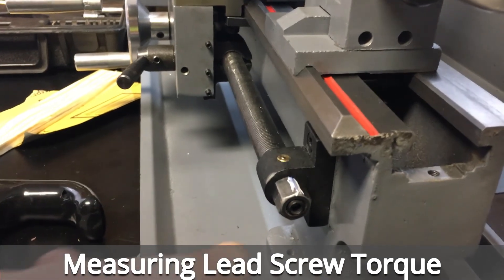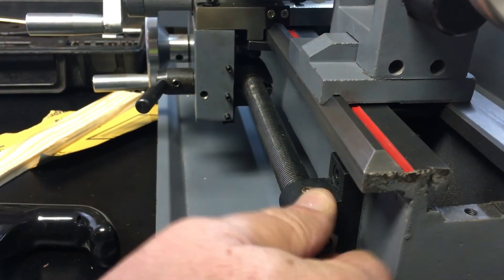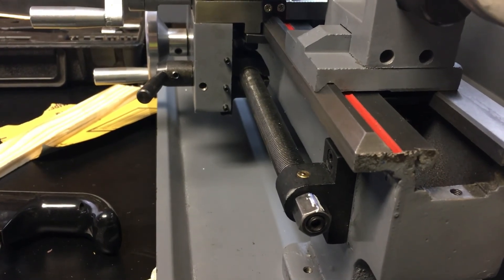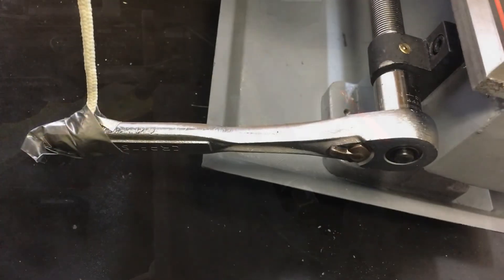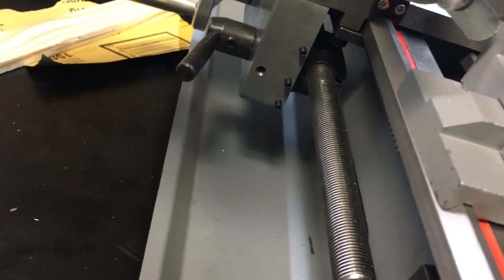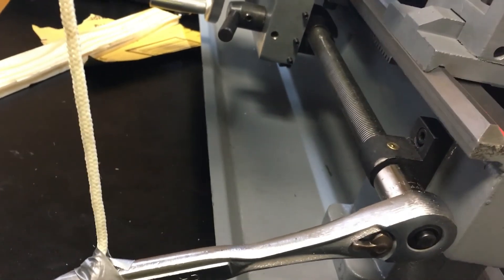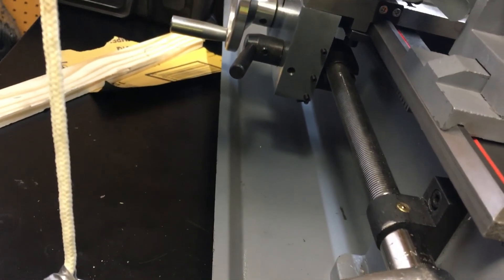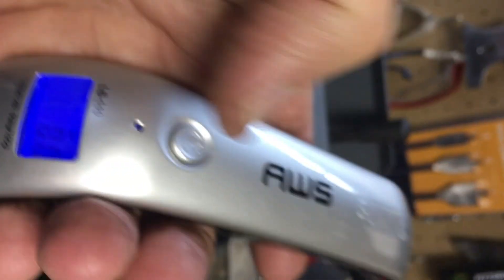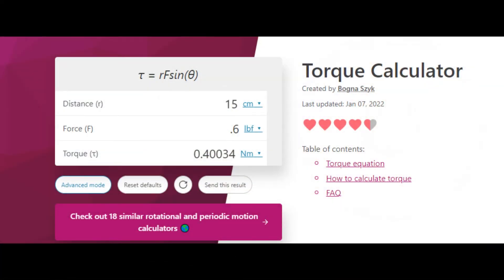I'm planning on attaching the stepper motor to the end of my lead screw. So that's a 14 millimeter hex nut there, so I need to turn that with the motor. I've got the carriage engaged with the lead screw. So I set up this little measuring process. So I just put a socket on there. I measure 15 centimeters out from the center of the lead screw. I'm just using a luggage scale to measure the pounds that I need to pull to turn the lead screw. I'm getting about 0.6 of a pound. I fed these numbers into a torque calculator I found on the web. It comes out as 0.4 newton meters of torque required to turn the lead screw.